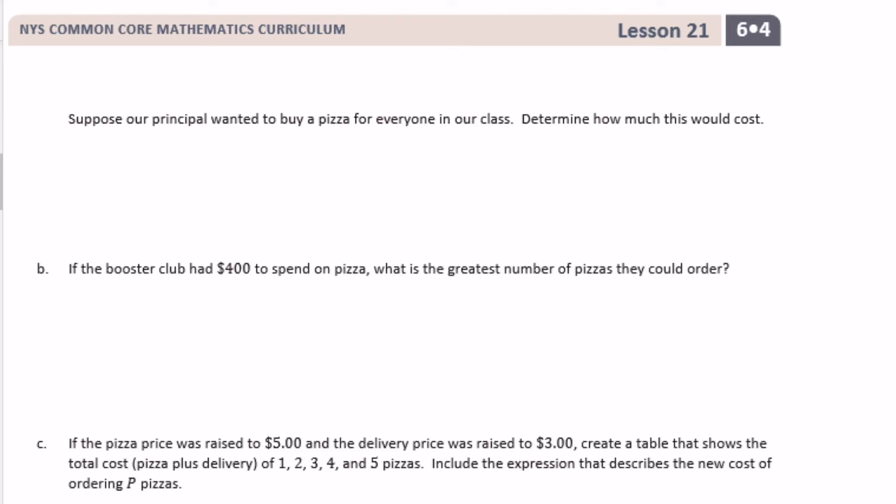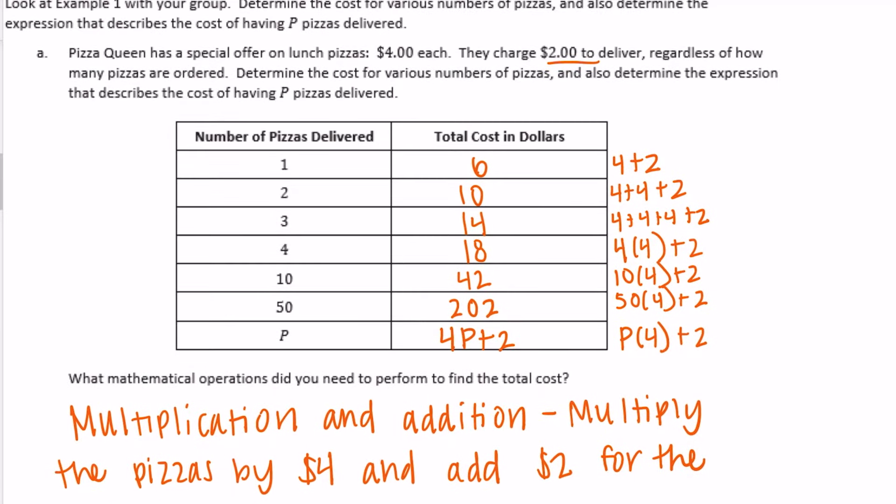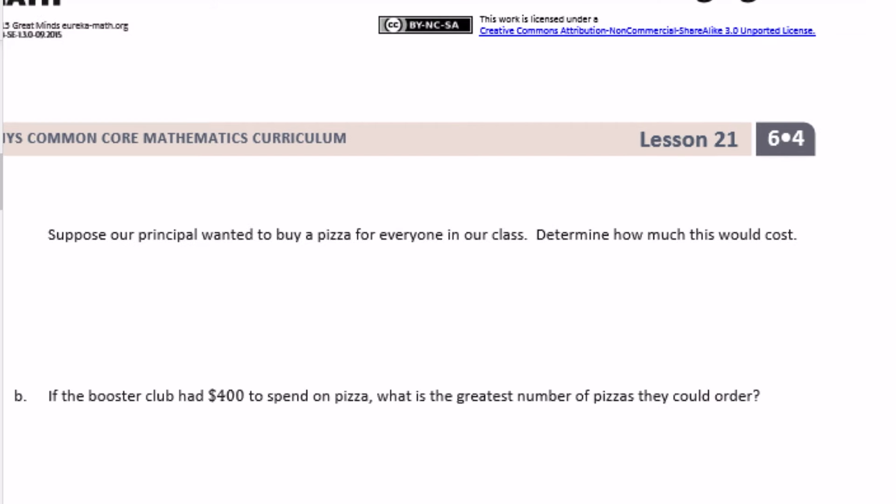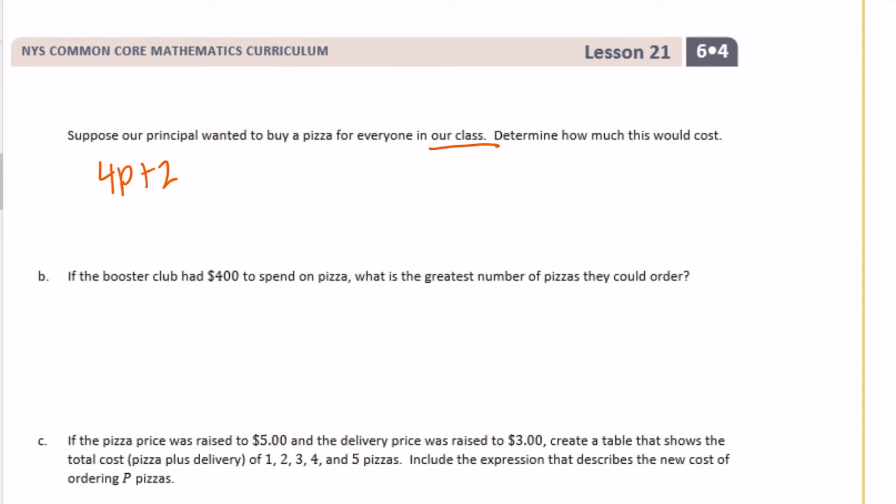Suppose our principal wanted to buy a pizza for everyone in our class. Determine how much this would cost. Remember, it was $4 per pizza plus the delivery fee or 4P plus two. So this is going to be different for everyone depending on how many people are in your class. So a normal class usually has like 20 to 30 people in it. So let's just say there's 25 people in the class. So let's do four times 25 people plus the $2 delivery fee would be equal to $100 plus $2. Or for this particular class, it would cost $102 for everyone in that class. But again, this answer is going to be different for everyone and depending on how many people are in your class.